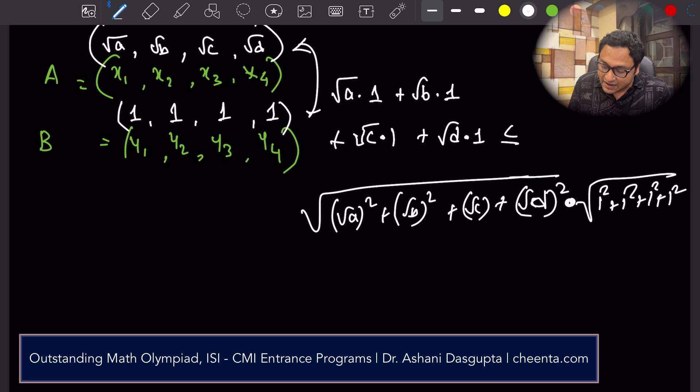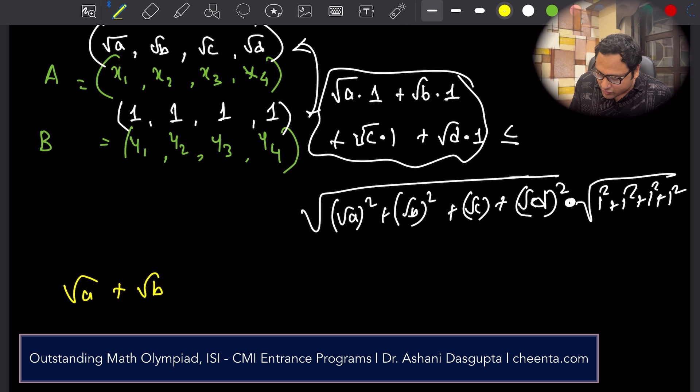times square root of 1 square plus 1 square plus 1 square plus 1 square. So left-hand side is exactly what I wanted. It is square root of A plus square root of B, square root of C plus square root of D, less than or equal to square root of A plus B plus C plus D times square root of 4.